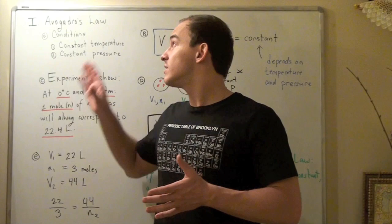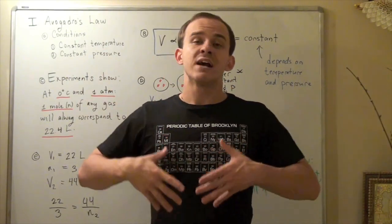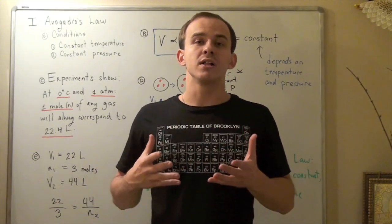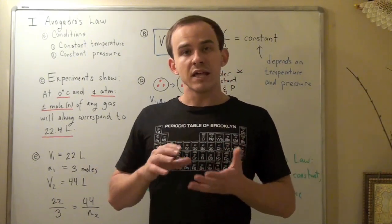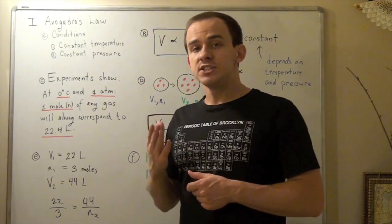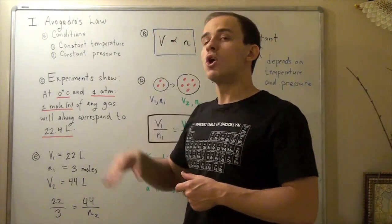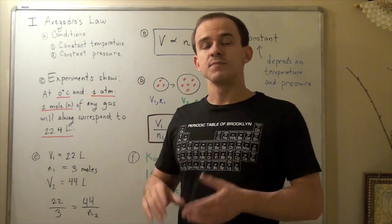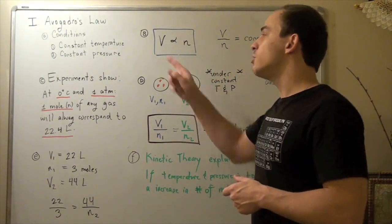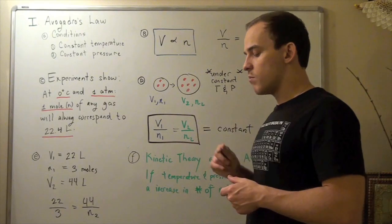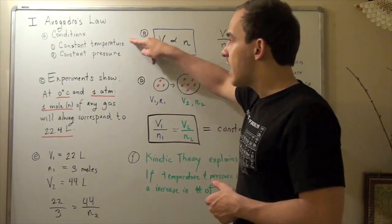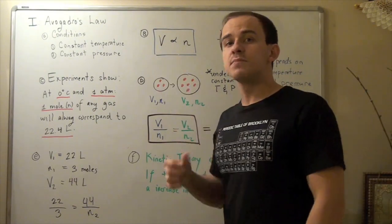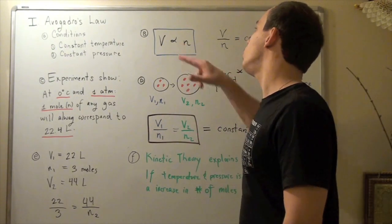Now we're going to look at a third law called Avogadro's law, and we're going to see how this law also helps us gain more intuition about the interactions of gas molecules on the macroscopic level. So let's look at the conditions under which this law holds. This law will only work when our pressure and temperature are both held constant. And what this law tells us is that volume is directly proportional to the number of moles. If these are held constant, the only way we can increase our volume is to add more gas, or to add more moles of gas.